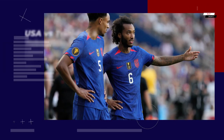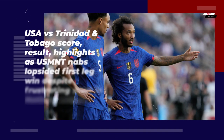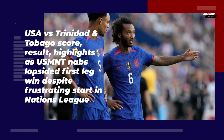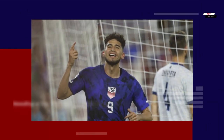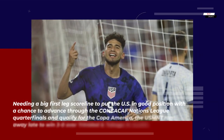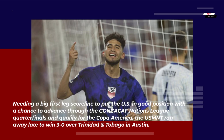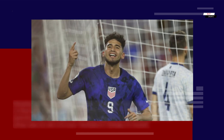USA vs Trinidad and Tobago score, result, highlights as USMNT nabs lopsided first-leg win despite frustrating start in Nations League. Needing a big first-leg scoreline to put the US in good position with a chance to advance through the CONCACAF Nations League quarterfinals and qualify for the Copa America, the USMNT ran away late to win 3-0 over Trinidad and Tobago in Austin.